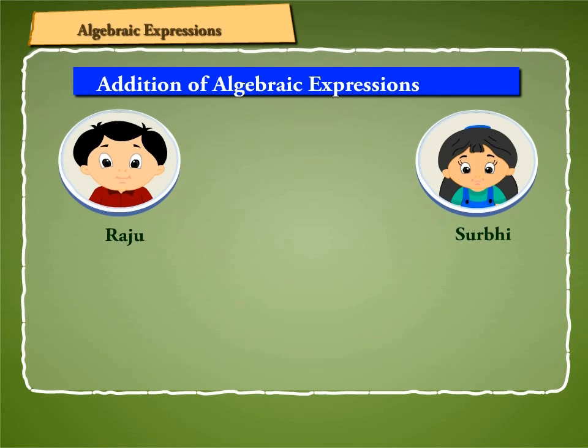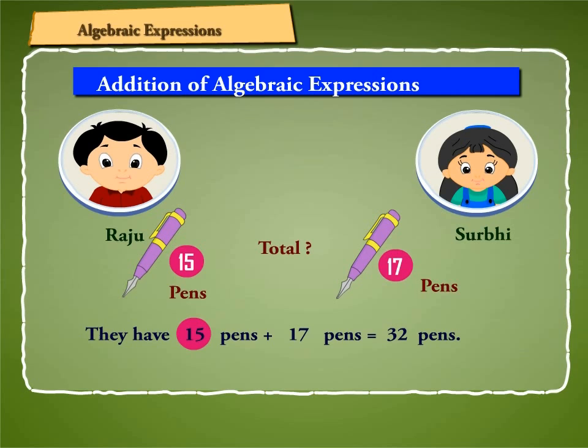Let us take an example. Suppose Raju has 15 pens and Surbhi has 17 pens. How many pens do they have altogether? They have 15 pens plus 17 pens is equal to 32 pens.